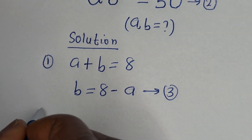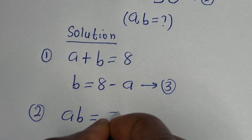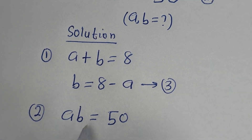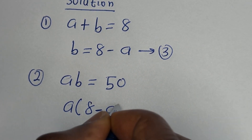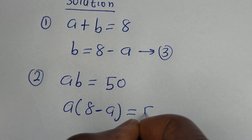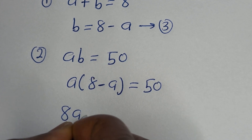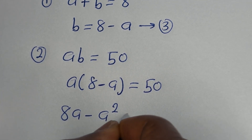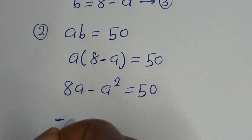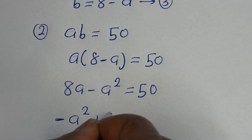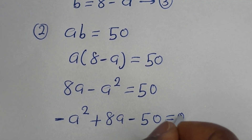Then from equation 2, A times B is equal to 50. Let us substitute for B: A times (8 minus A) is equal to 50. Let us open the bracket: 8A minus A squared is equal to 50. Now let us put this in standard form: minus A squared plus 8A minus 50 is equal to 0.